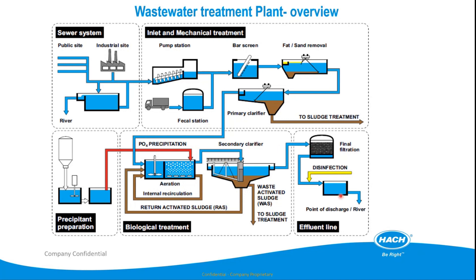After secondary treatment we have disinfection. For wastewater disinfection we need to be very careful because even after treatment there may still be a high amount of organic compounds. When we use chlorine to treat this water we can produce disinfection byproducts, which are very harmful to human health. So we have two different technologies: we can use either chlorine or UV. More and more today we use UV to replace chemical chlorine.